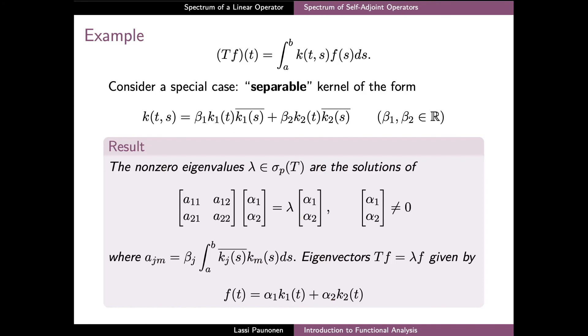The derivation for the eigenvalue problem and the forms of the eigenfunctions are presented in detail in the lecture notes. The outline of the argument is that if k is separable, then for any function f, the image Tf is necessarily a linear combination of k₁ and k₂. Because of this,